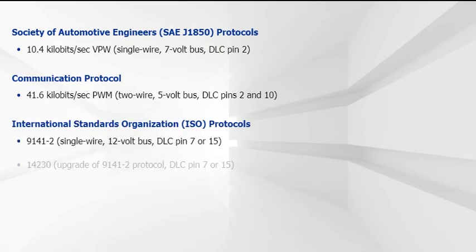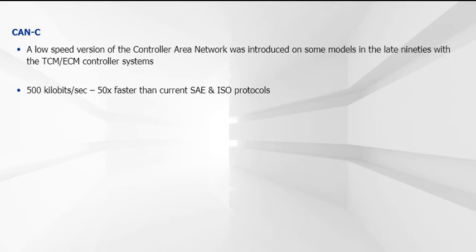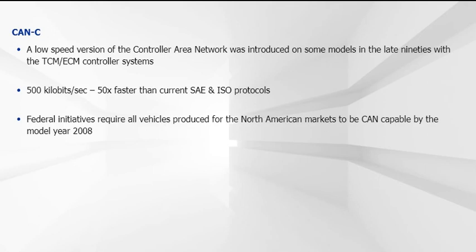These are examples of communication protocol variances used by manufacturers. Another protocol you should be familiar with is the high-speed version of CAN, or Controller Area Network. This is a two-wire, low-speed communication system that operates at approximately 500 kilobits per second, which is more than 50 times faster than current SAE and ISO protocols. While CAN will significantly increase the speed at which data is transmitted to a scan tool, current aftermarket scanners will be unable to communicate with the new system, and it is unlikely that a simple software upgrade will remedy the situation. CAN is a mandatory requirement by the Federal Government for all vehicles produced for North America by model year 2008.